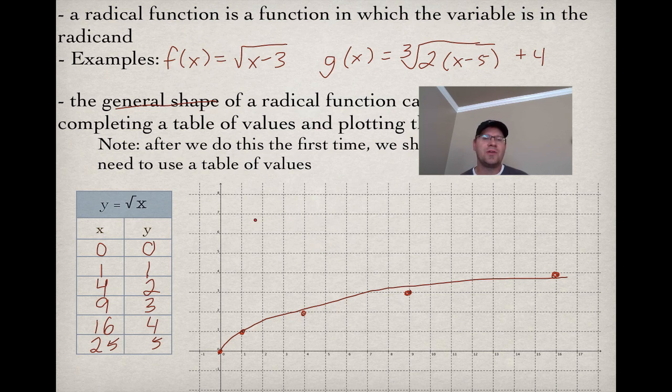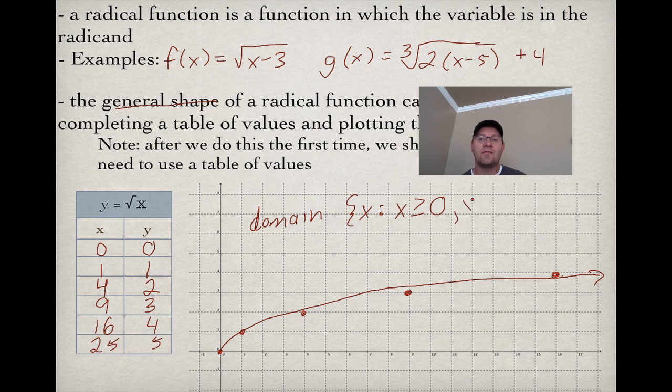Now, other important things is that we should take a look at the domain of this function. The domain, if you remember, is how far it goes from left to right. This function will go on forever to the right. So our domain is described by x is greater than or equal to 0, because it's everything to the right of 0. And since there's no gaps in that, that is all the real numbers as well.